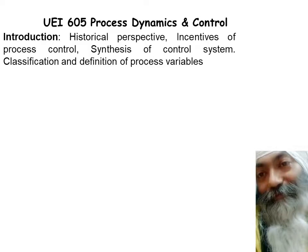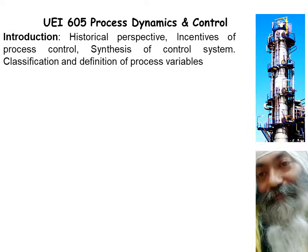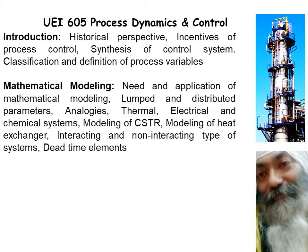Going in for the syllabus, I'll be dealing with the introduction part: the historical perspectives, incentives of process control, synthesis of the control system, and classification. Definition of process variables — and here you see one part of the chemical process, just to give you an idea how the process plant looks like, what are the various components, and how they behave. That's what we're going to model.